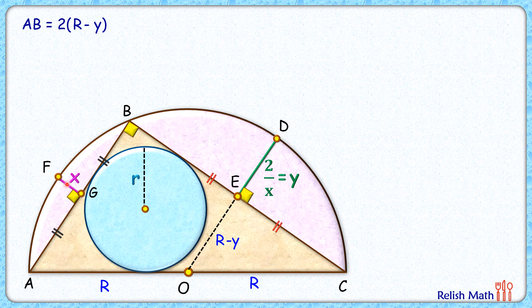Exactly the same way, let's extend FG which is perpendicular bisector, it will pass through center O. Now FO is R so GO will be R minus x. And in triangle ABC applying midpoint theorem we will get BC length as 2 times R minus x.